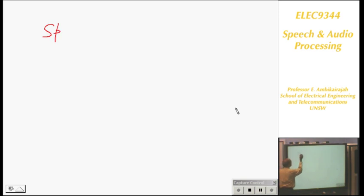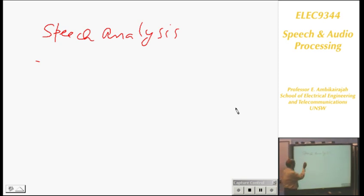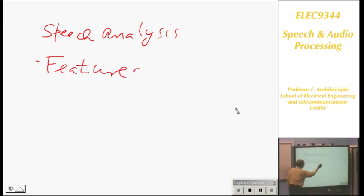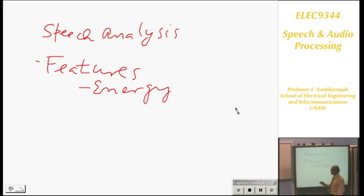Speech analysis. Right. What's the first thing we did? Energy. So we were talking about features. Under features, what did we do? Energy was one. What's the second one? Zero crossing counts. That's the second one.